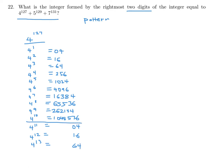Just like we had 04, 16, 64 early on, the same pattern starts repeating at power 11 onwards — the last two digits repeat every 10 powers. So 4 to the power of 127 behaves the same as 4 to the power of 7, and the last two digits are therefore 84.